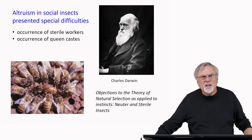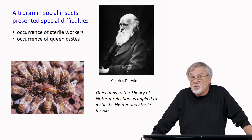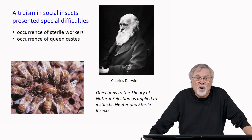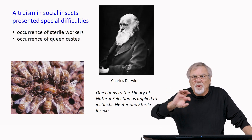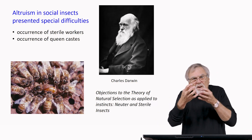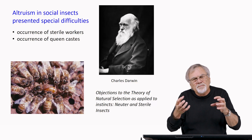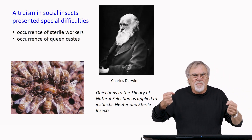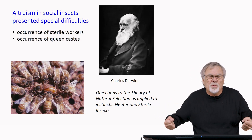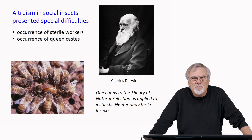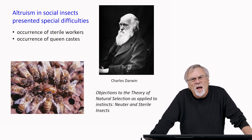So how do you then explain the occurrence of sterile workers — workers who don't reproduce — and queen castes, individuals who are differentiated and distinct from the others who can't reproduce, while the queens can reproduce? He dealt with this at length in his chapter on objections to the theory of natural selection as it applies to instincts, neuter and sterile insects.